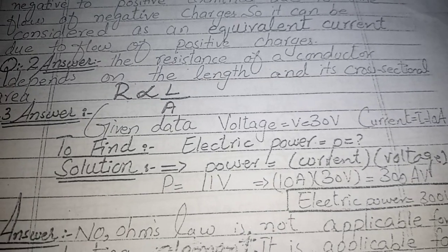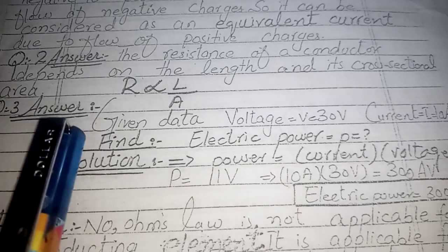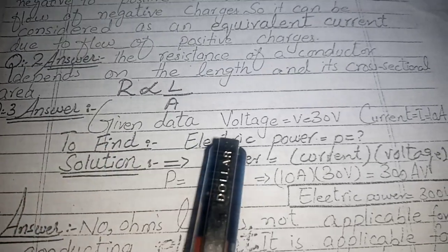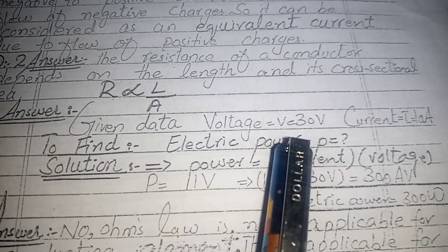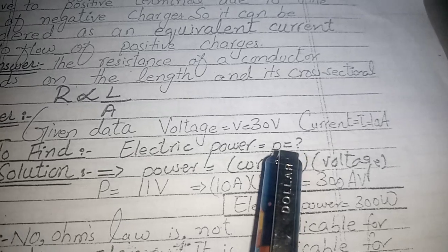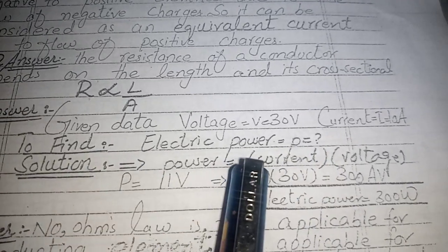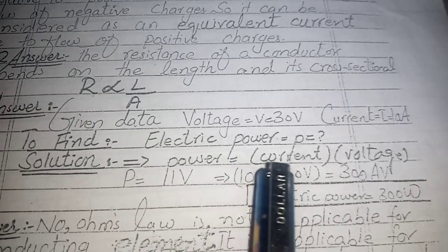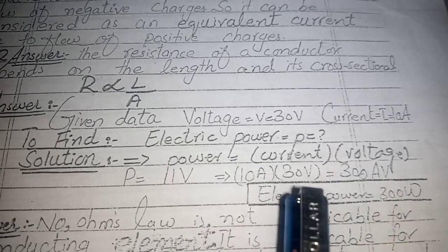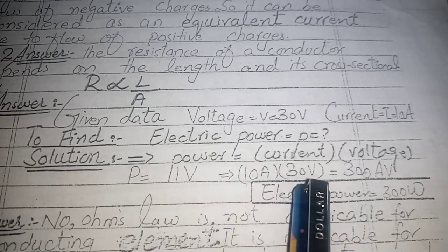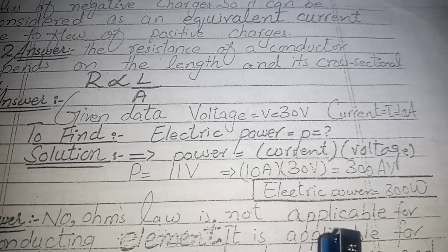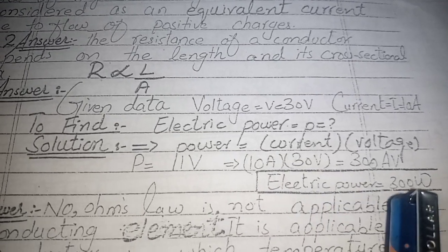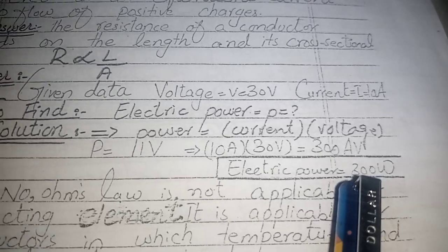Question 3: Given voltage = 30 volts and current = 10 amperes, calculate the electric power. Using the formula P = I × V, we get 10 amperes multiplied by 30 volts, giving electric power equal to 300 watts, which is the SI unit of electric power.